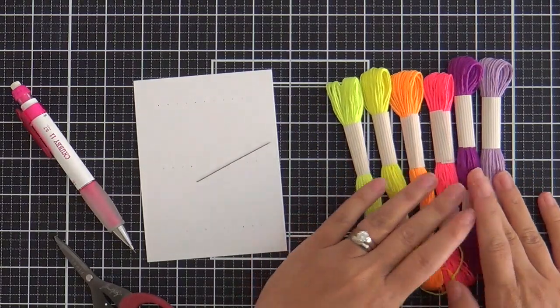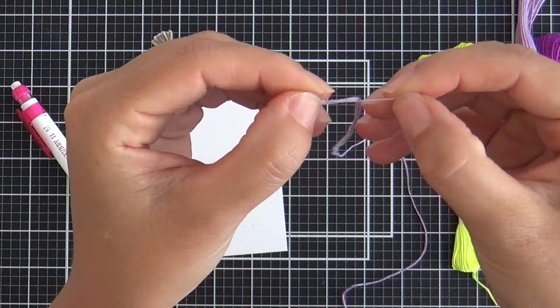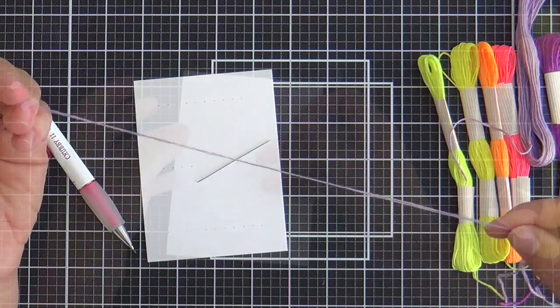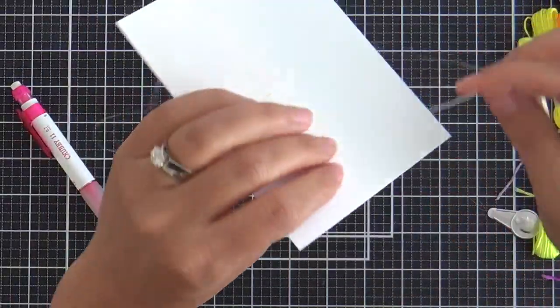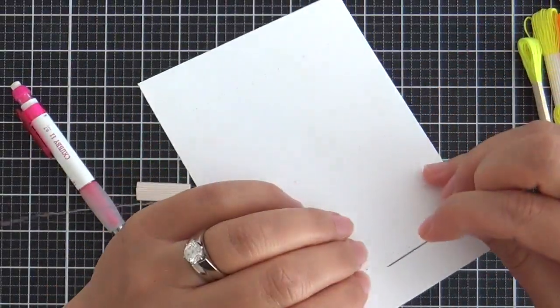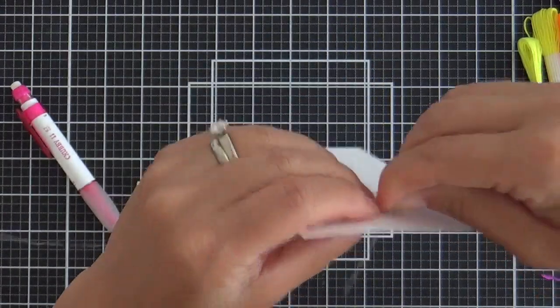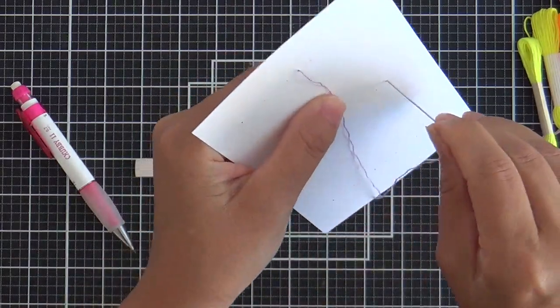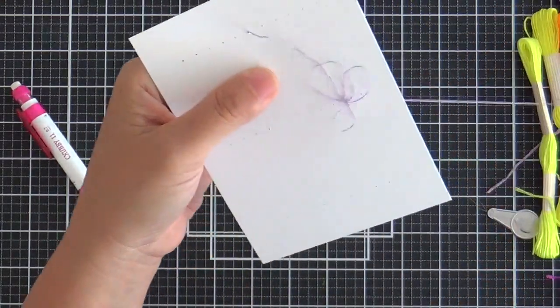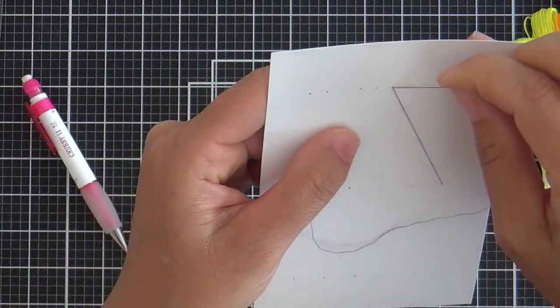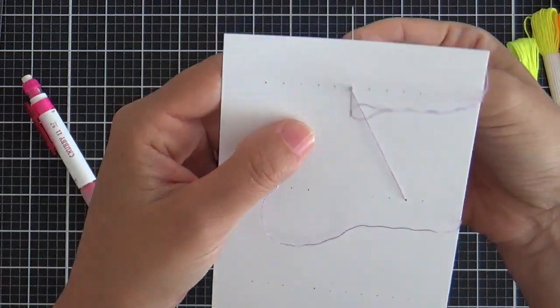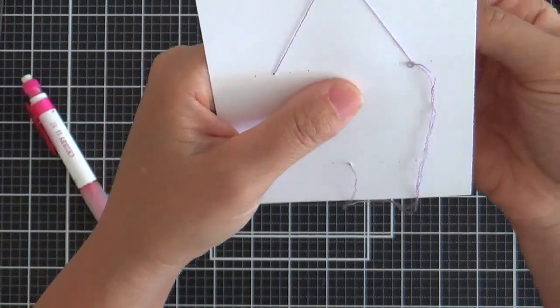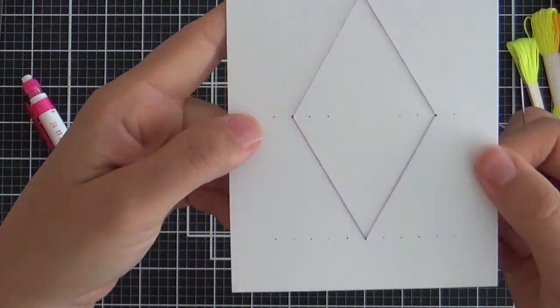I bought some neon embroidery floss at the dollar store. It was a dollar. I mean, forget about it. And it's neon colors. So what I did was I took one single strand or thread out of the embroidery floss strand. You know how the embroidery floss has like five or six little threads all wound together. Well, I took one thread or strand out of it. I isolated it so it could be very, very skinny and fine.